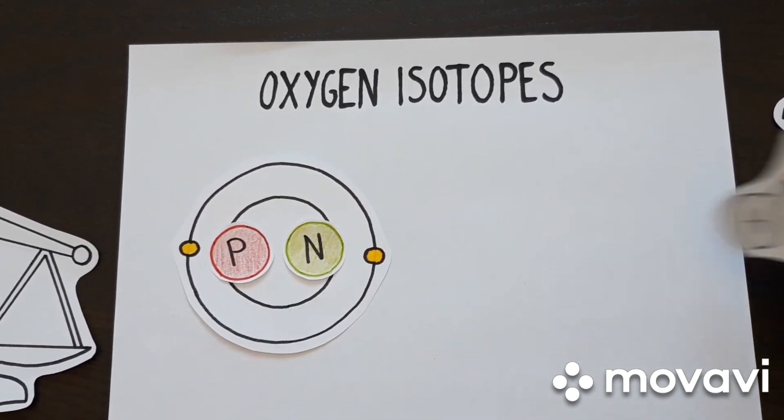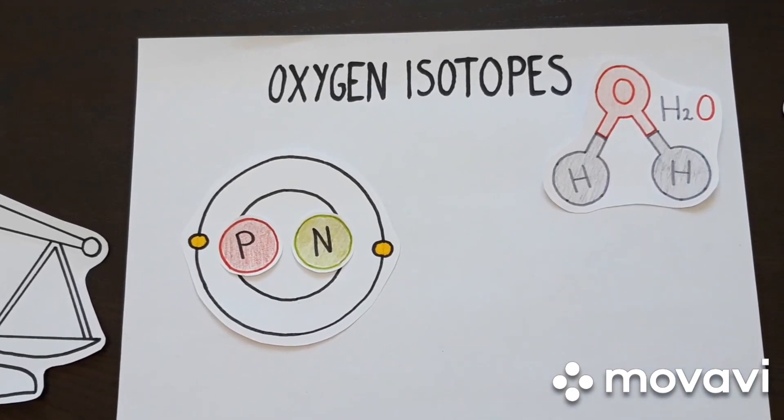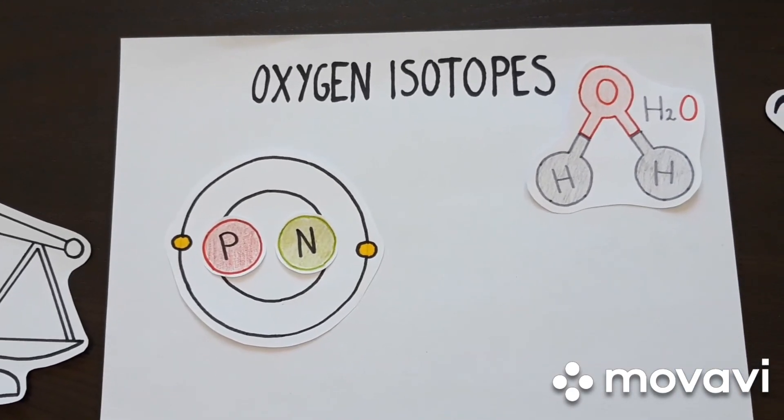The molecule of water, H2O, is composed of two hydrogen atoms and one oxygen atom.